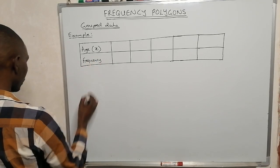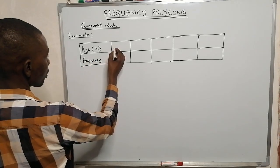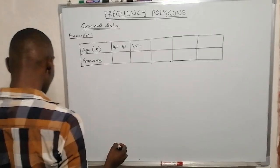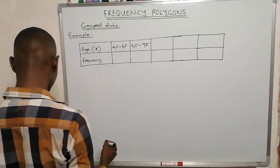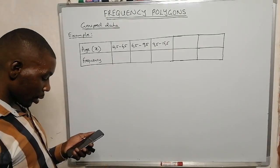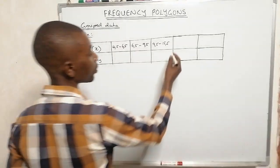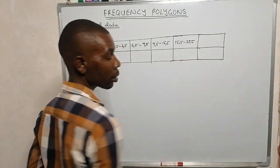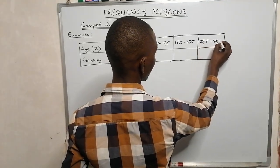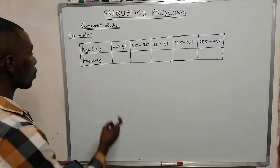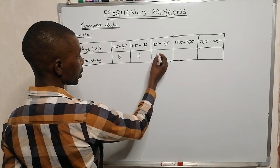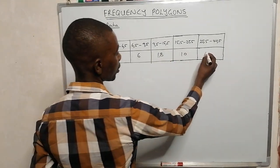The class intervals are: 4.5 to 6.5, 6.5 to 9.5, 9.5 to 15.5, 15.5 to 25.5, and 25.5 to 40.5. The corresponding frequencies are: 8, 6, 18, 10, and 13.